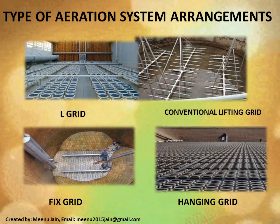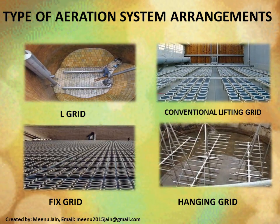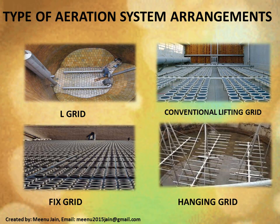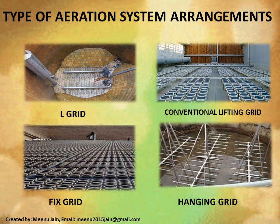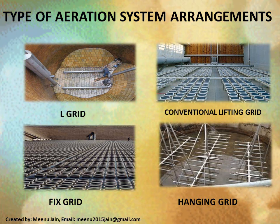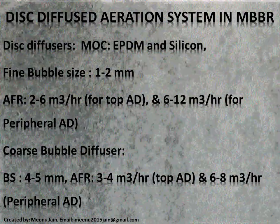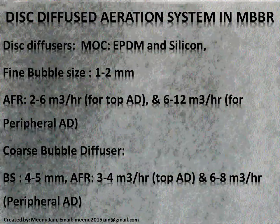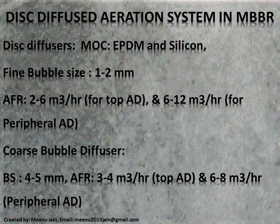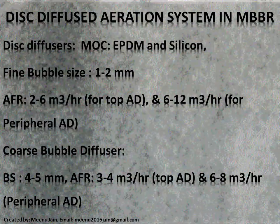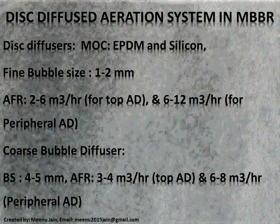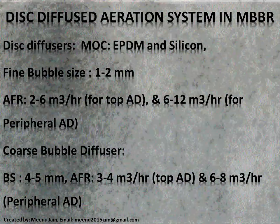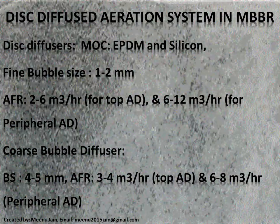There are many arrangements available for diffuser aeration systems, including L-grid, conventional lifting grid, fixed grid, and hanging grid, used as per the process and operation maintenance requirements. In the disc diffuser system, small discs are placed on top of a pipe. The materials of construction for these discs are mainly EPDM — ethylene-propylene diene monomer, or simply synthetic rubber — and silicone. Disc diffusers are available as both fine and coarse bubble diffusers.